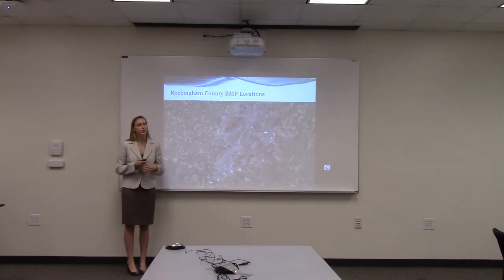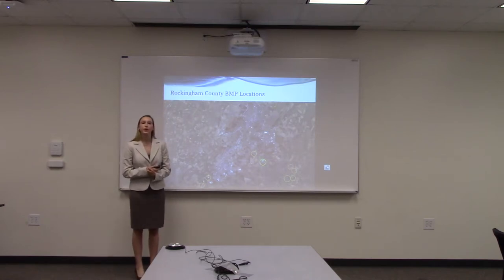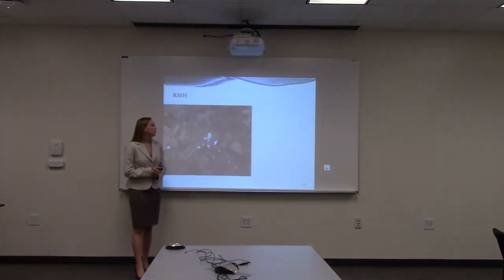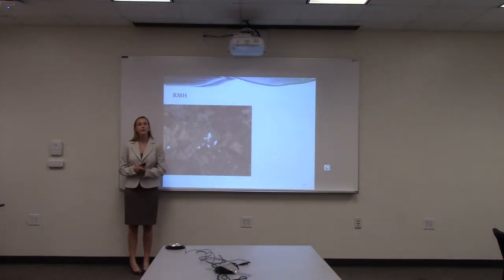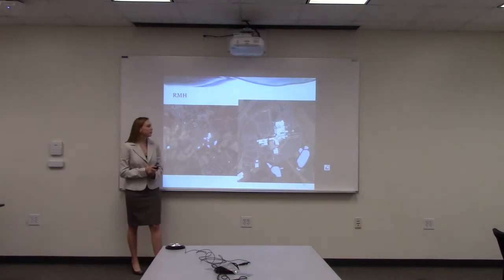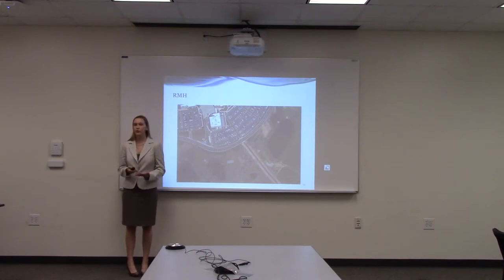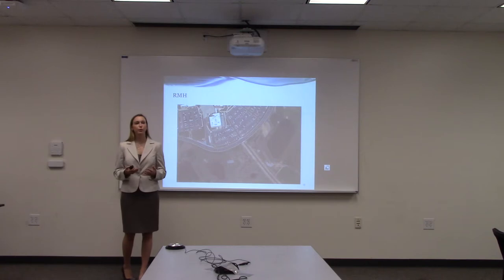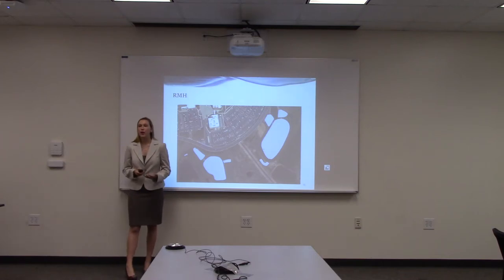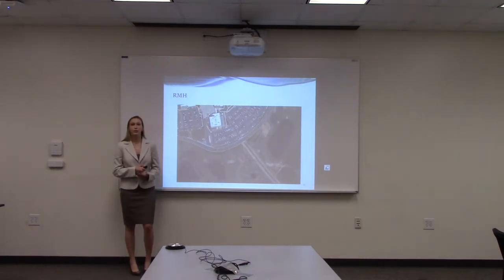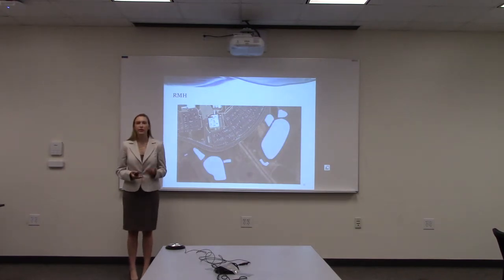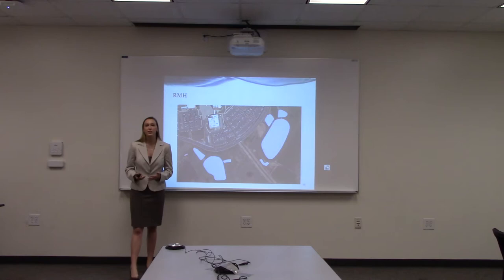I'll zoom in and focus on Rockingham Memorial Hospital. In GIS it shows areas, points, and lines for the facility. In the aerial view, the areas not shaded in are where the basins or facilities are — you can see points and flows into the facilities. When I overlay it on the map, the areas we mapped align over the actual facility area, confirming our map is accurate and all information is correctly aligned to the basins and facilities we are recording.